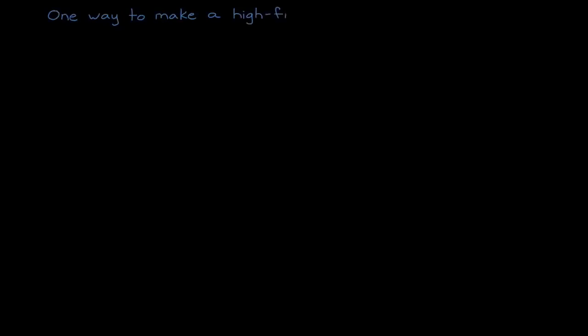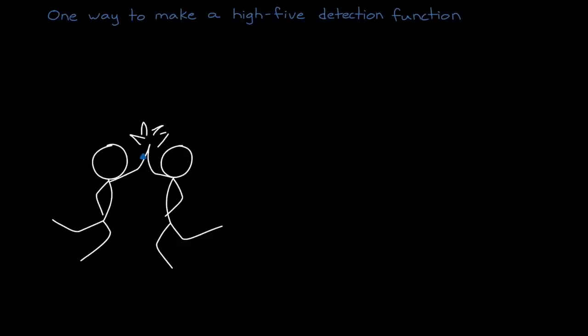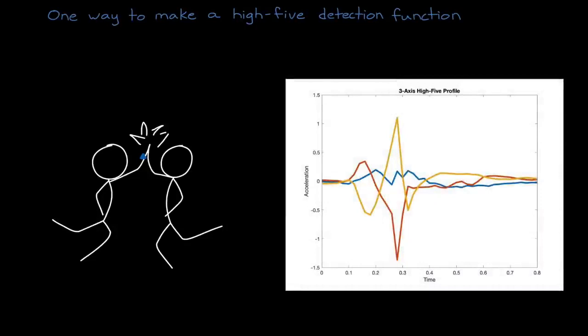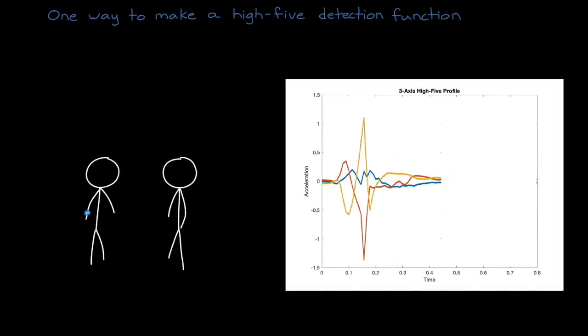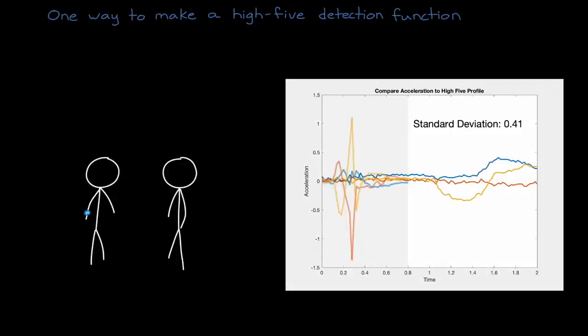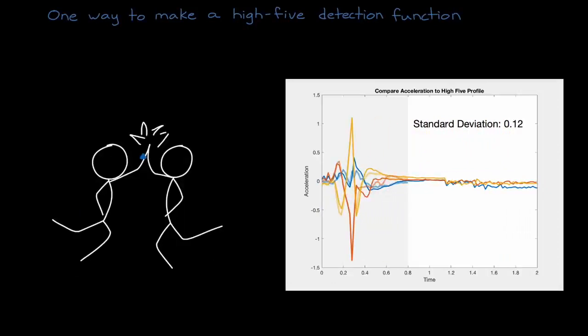Now, here is one example of how we might use a rule-based approach to design this function. Ahead of time, we could record the acceleration of a person performing a high five. We can label this particular acceleration profile as a high five since we purposefully set up the test to produce this data. Now we can use this labeled data to come up with a representative profile that we could pattern match against the continuous stream of acceleration measurements from the sensor. Our function could look at the standard deviation between the two signals, which is hovering around 0.4 for non-high five motions, and we could claim that there was a high five when the deviation drops below some threshold.